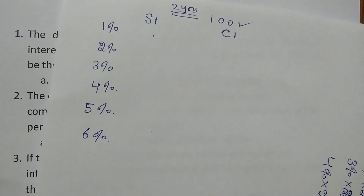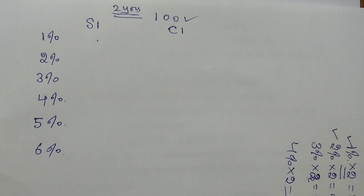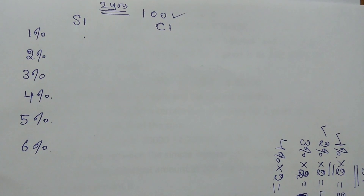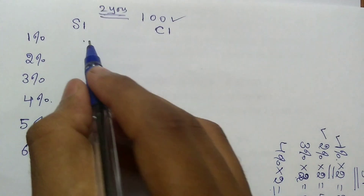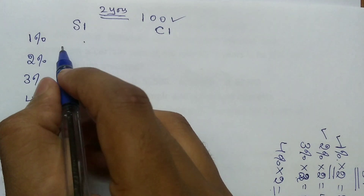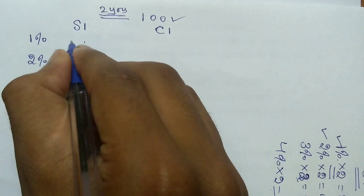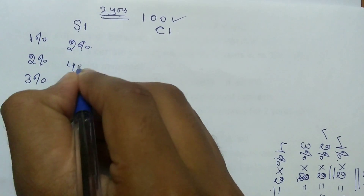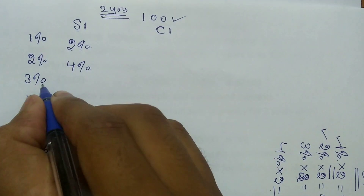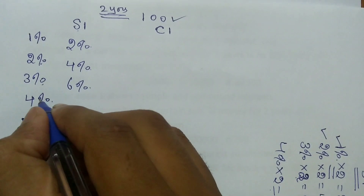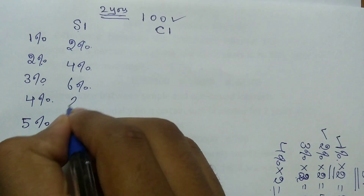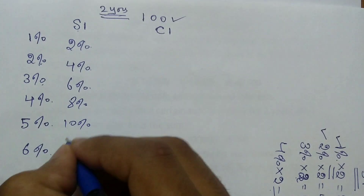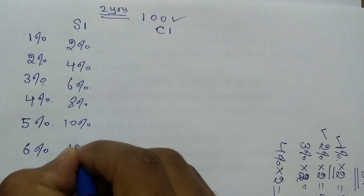You can easily memorize this table, but you don't need to if you understood the concept properly. In simple interest: 1% per annum for 2 years = 2%; 2% = 4%; 3% = 6%; 4% = 8%; 5% = 10%; 6% = 12%.